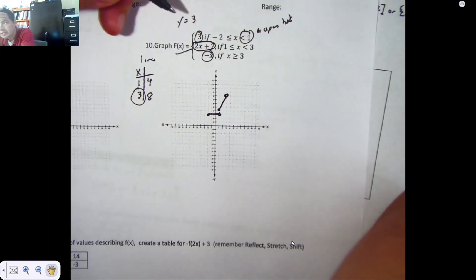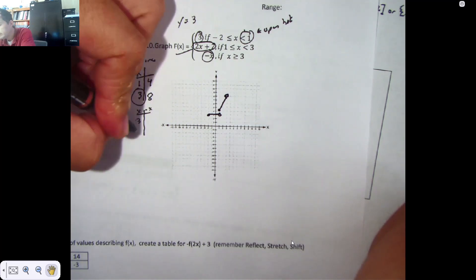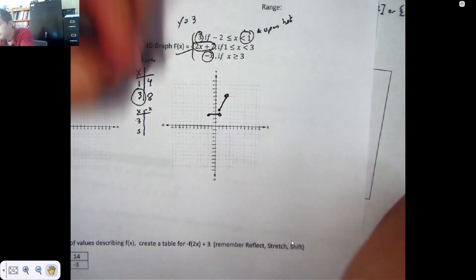Then we have negative x if x is greater than or equal to 3. So we have negative x, we can plug in a 3, we can plug in a 5. We just need 2 points, right?